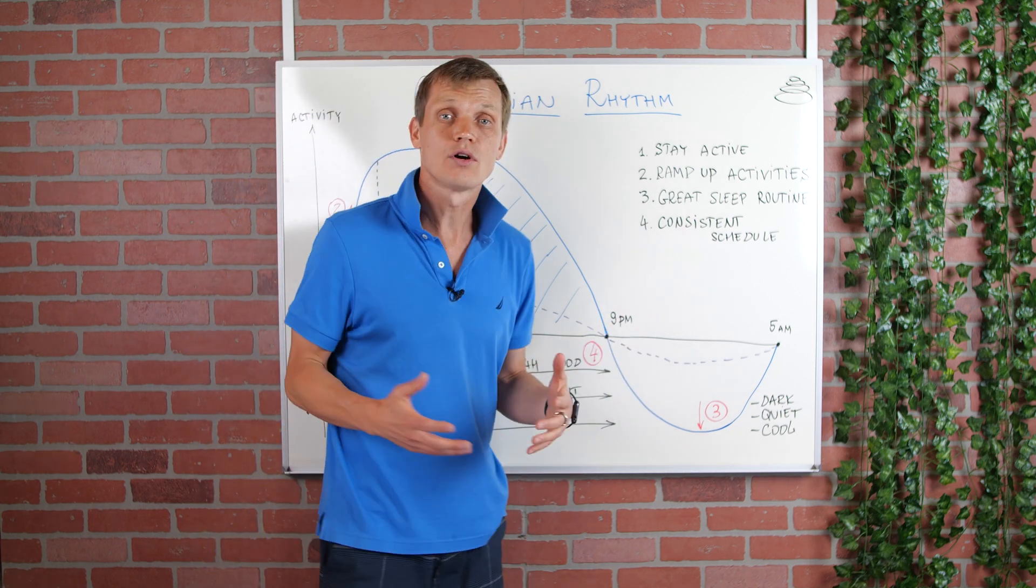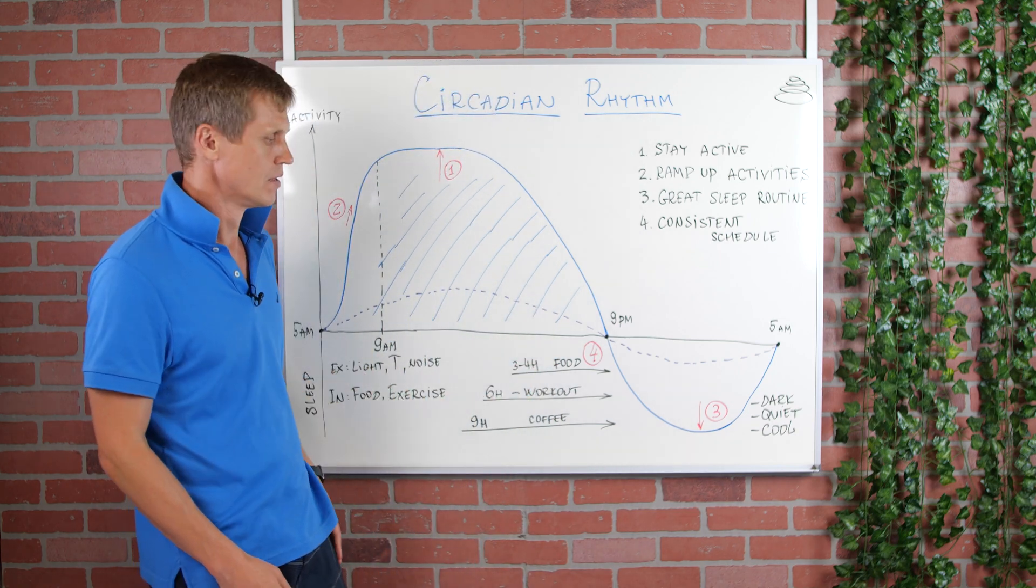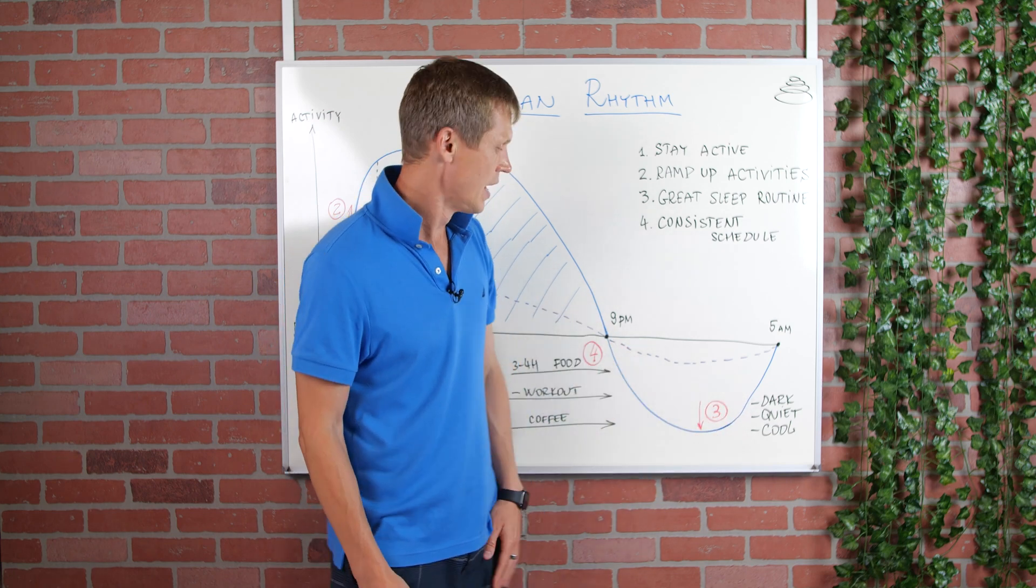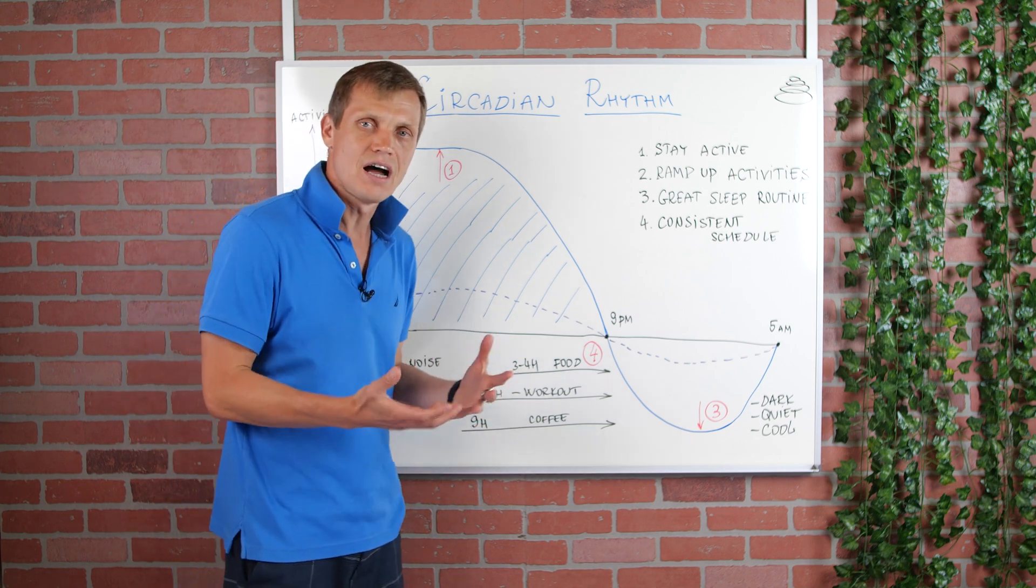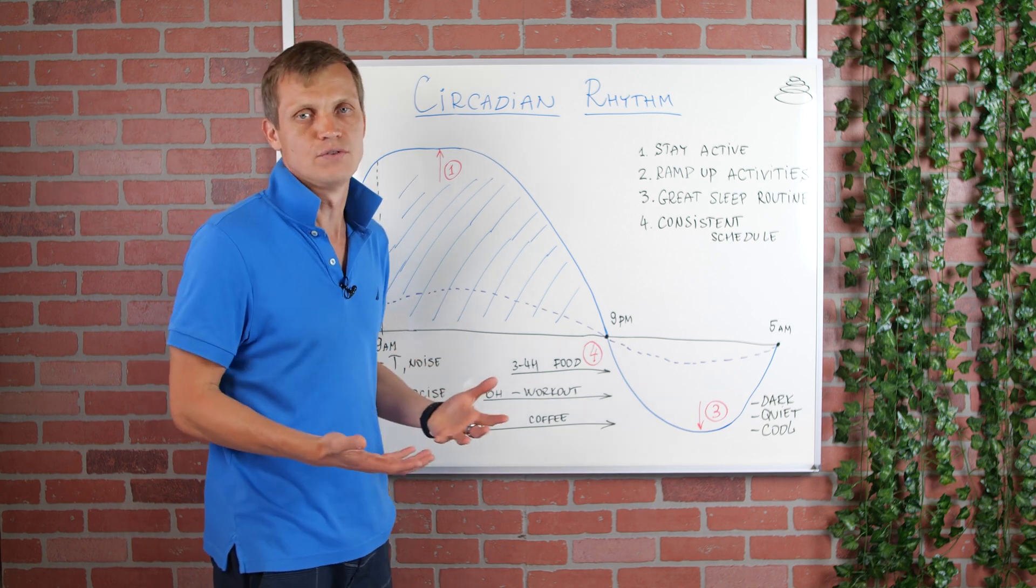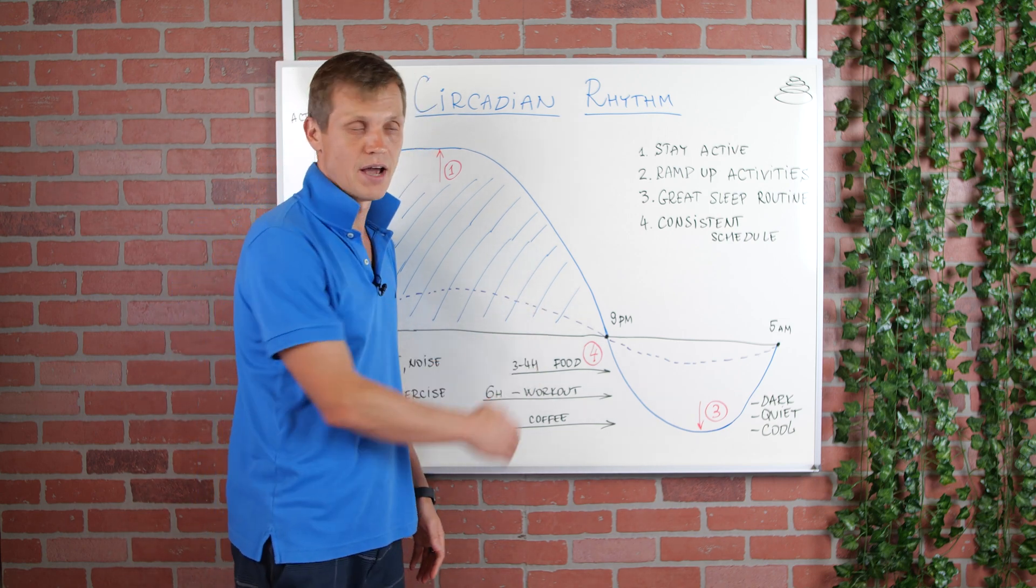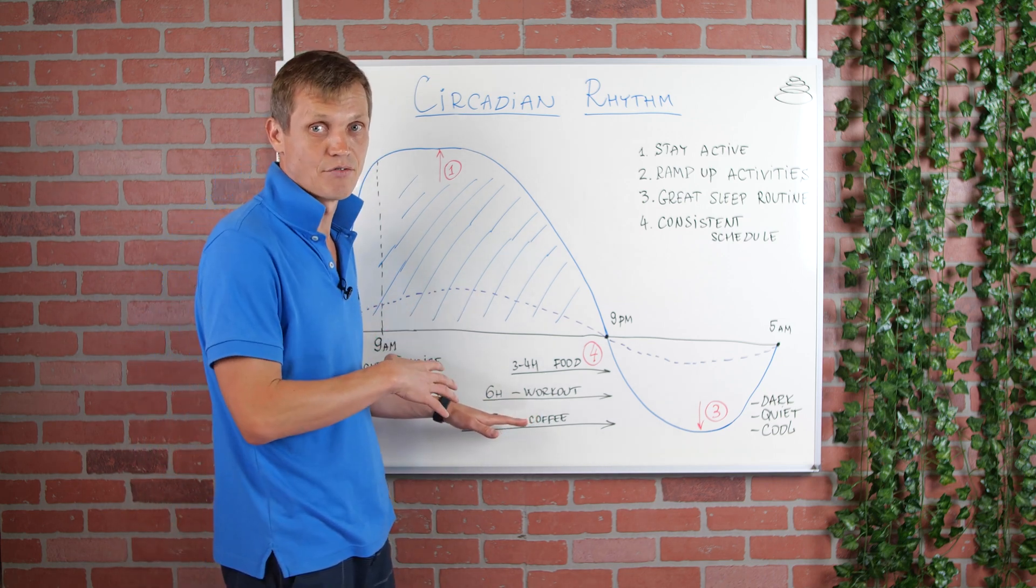And here again, we're talking about leveraging external cues and internal processes. From the external cues perspective, I'm trying to keep my bedroom dark, quiet, and cool. And from internal processes, I'm trying to give enough time for my body to finish up all metabolic process of digesting food. So, I'm trying to have my dinner at 5-6 pm. I'm trying to avoid any workouts in the second half of the day.